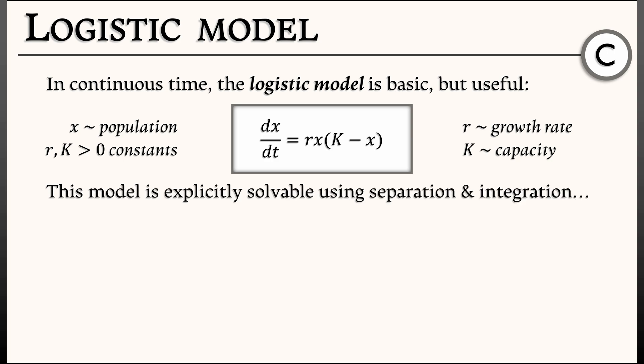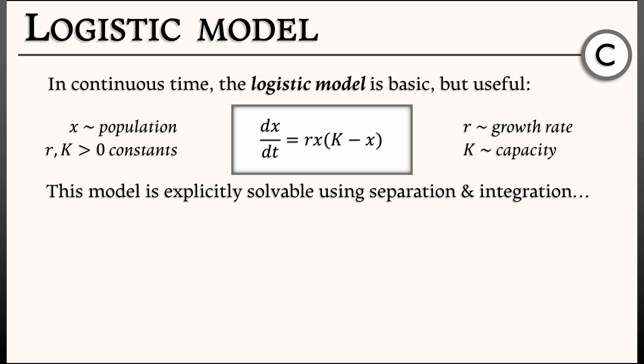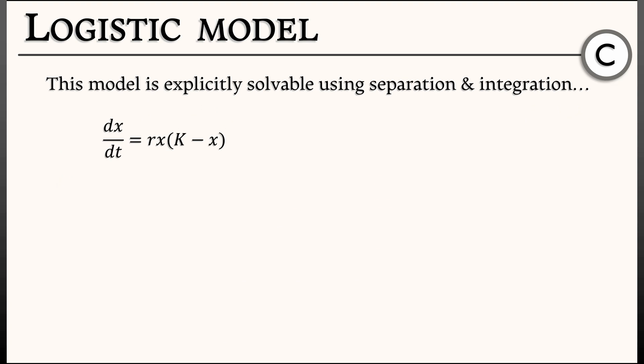This model can be explicitly solved using the tools of calculus. Let's dig in and do it. We take our equation, dx/dt equals rx times the quantity (k minus x), and we're going to do separation of variables. That means we get all the x's to one side and all the t's to the other. Doing so gives us dx over x times (k minus x) equals r times dt.